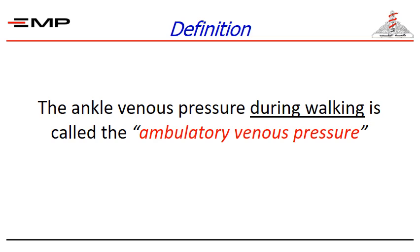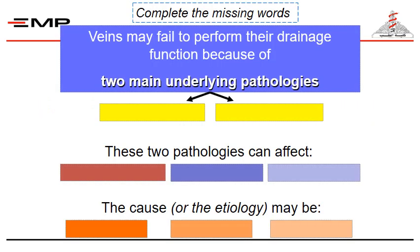So here we have a definition. What is the ambulatory venous pressure? The ankle venous pressure during walking is called the ambulatory venous pressure. Try to fill in the missing words as a preparation for the face-to-face session. I didn't directly provide you with all the necessary information, yet you may be able to guess. Please pause the video and try to fill in the spaces. We will discuss this in the face-to-face session.